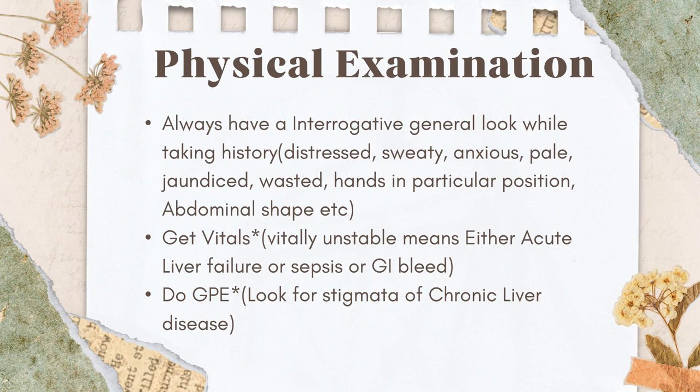For physical examination, always maintain an interrogative general look during history-taking, assessing whether the patient is in distress, sweaty, anxious, pale, jaundiced, wasted. Check abdominal shape and distension. Assess if the patient is vitally unstable — if so, this suggests acute liver failure, sepsis, or active GI bleed. These are the three major causes of vital instability in a jaundiced patient.